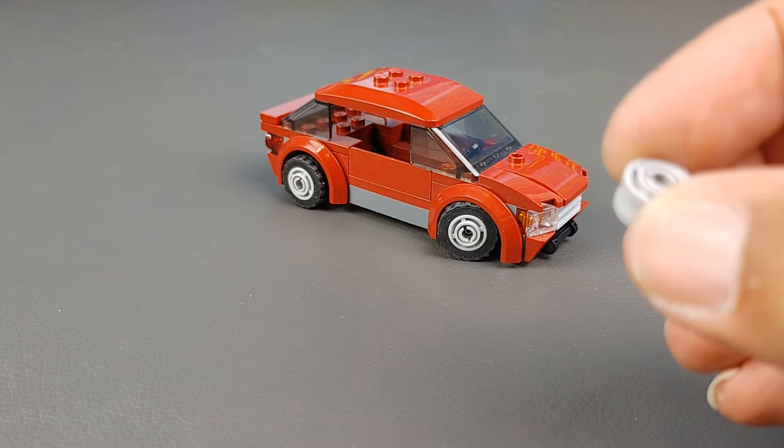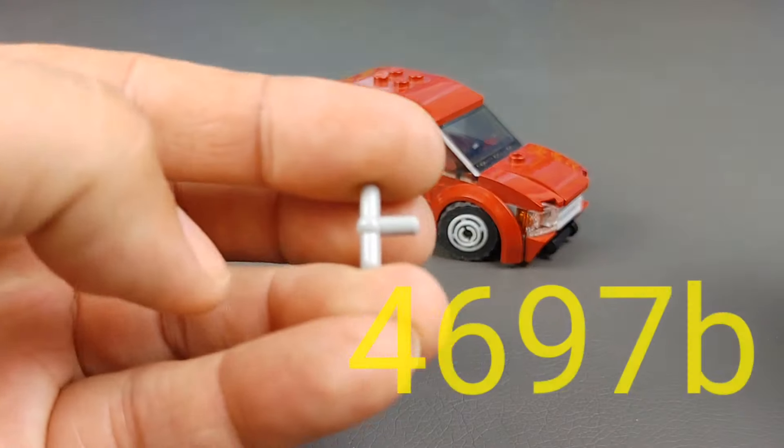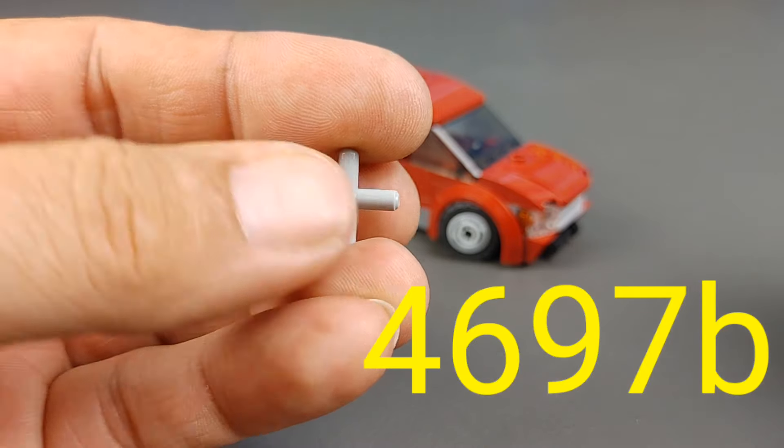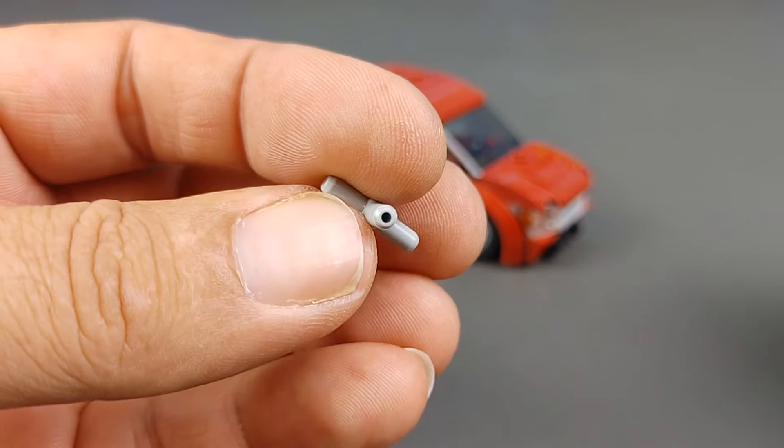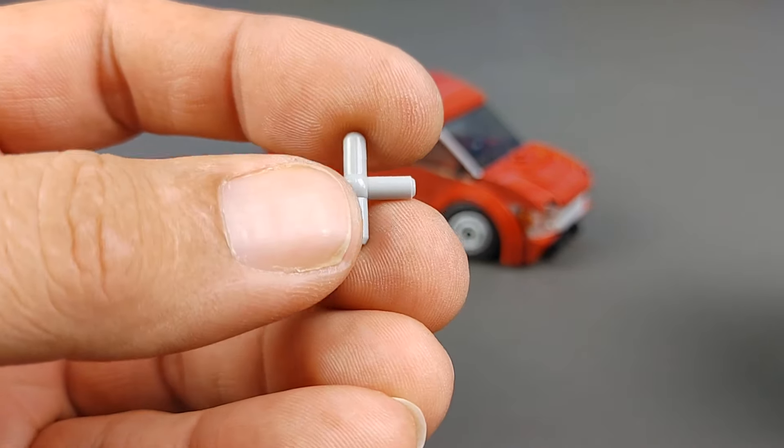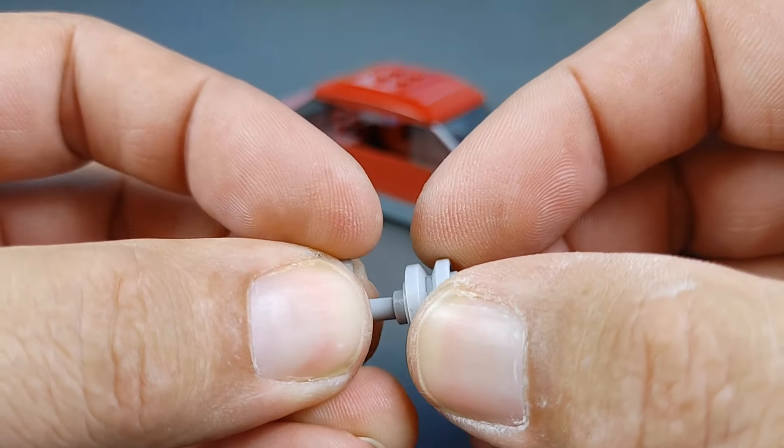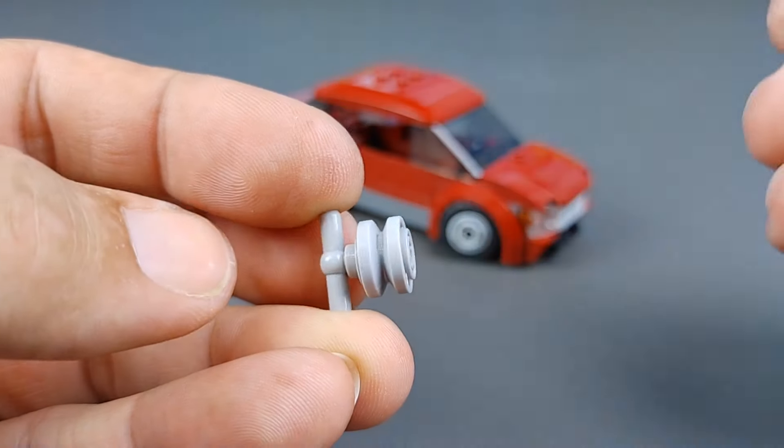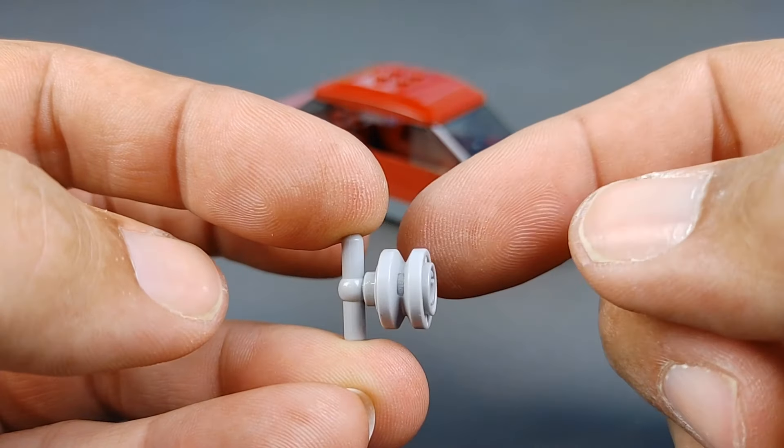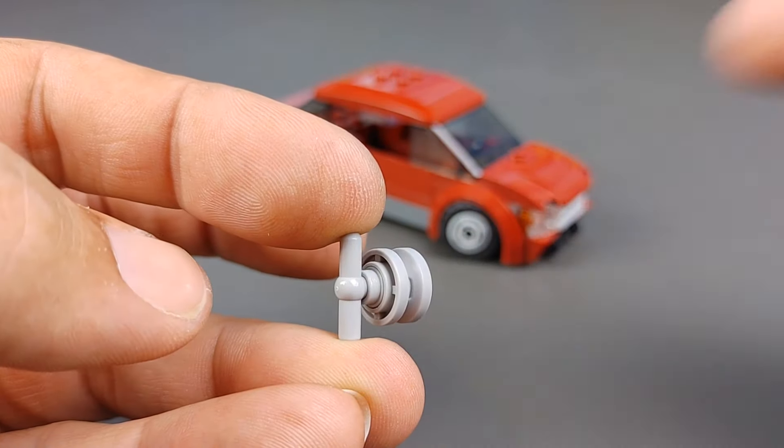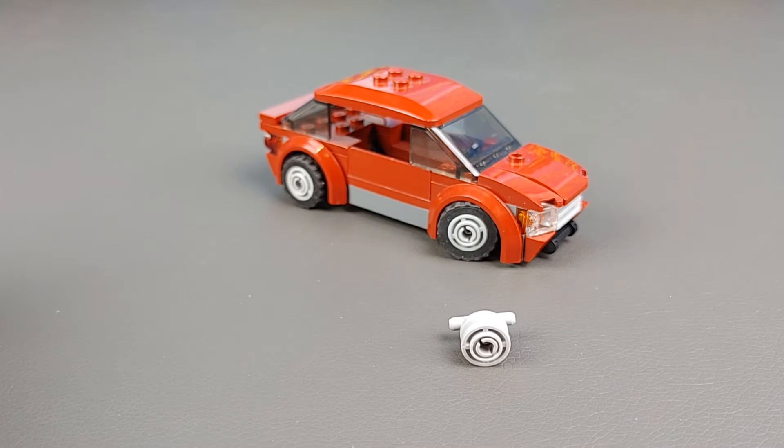Once you do that, you're going to take this little guy here, which is actually a t-bar that's supposed to be for pneumatics on LEGO. Take the wheel hub assembly and slide it into the t-bar like that, and that is what gives you your pivot motion.